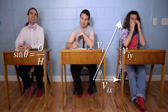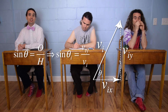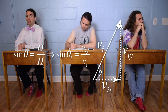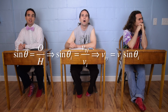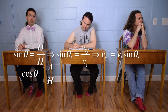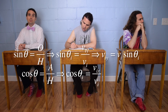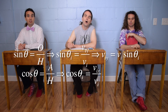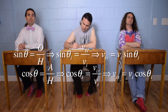Sine theta equals opposite over hypotenuse. Therefore, sine theta initial equals velocity initial in the y direction over velocity initial. Multiplying by velocity initial gives us that velocity initial in the y direction equals velocity initial times the sine of the initial angle. And cosine theta equals adjacent over hypotenuse. Therefore, cosine theta initial equals velocity initial in the x direction over velocity initial, and multiplying by velocity initial gives us velocity initial in the x direction equals velocity initial times the cosine of theta initial.